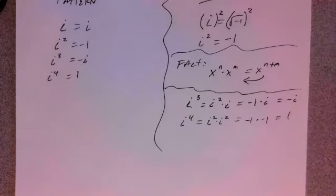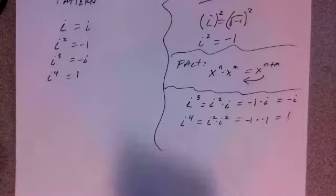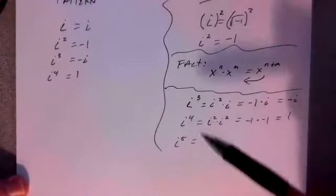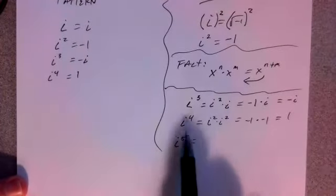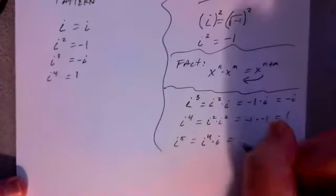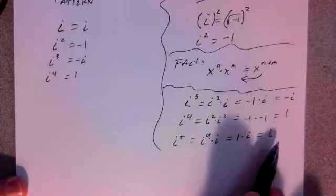This is quite possibly one of the coolest things I've ever seen. What about i to the 5th? I could break it up in a bunch of different ways — I could use i squareds: i squared, i squared, and then i. But i to the 4th is just 1, and 1 times anything is itself. So I'm going to break this into i to the 4th times i. i to the 4th is 1, and i is just i. So i to the 5th power gives us i.